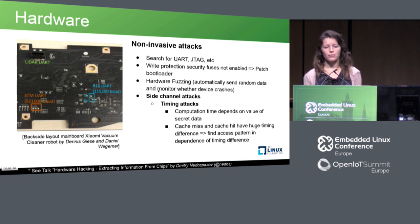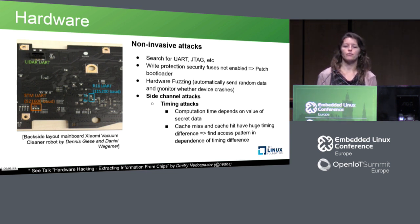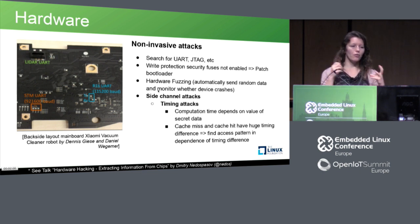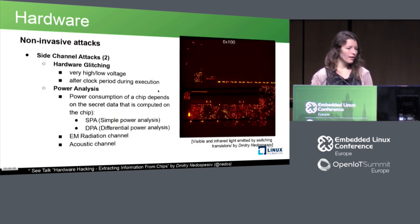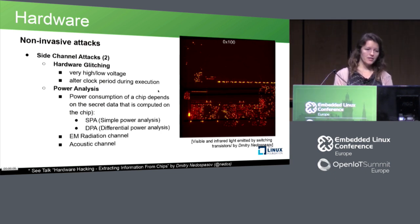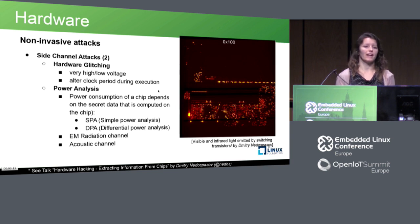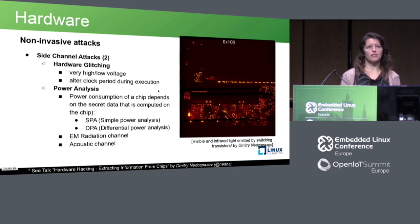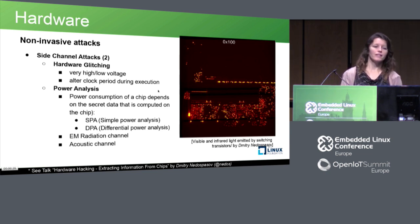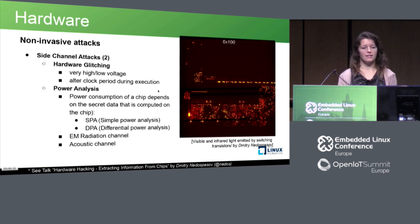In this kind of attack, you trace instructions, access register values, modify memory content or extract code and data, but you're not physically opening the chip. Other non-invasive attacks include hardware glitching — applying a voltage too high or too low — hoping for unexpected effects where the chip calculates incorrectly, letting you extract information about the secret. There are also clock glitching attacks that alter the clock period during program execution for a similar effect.